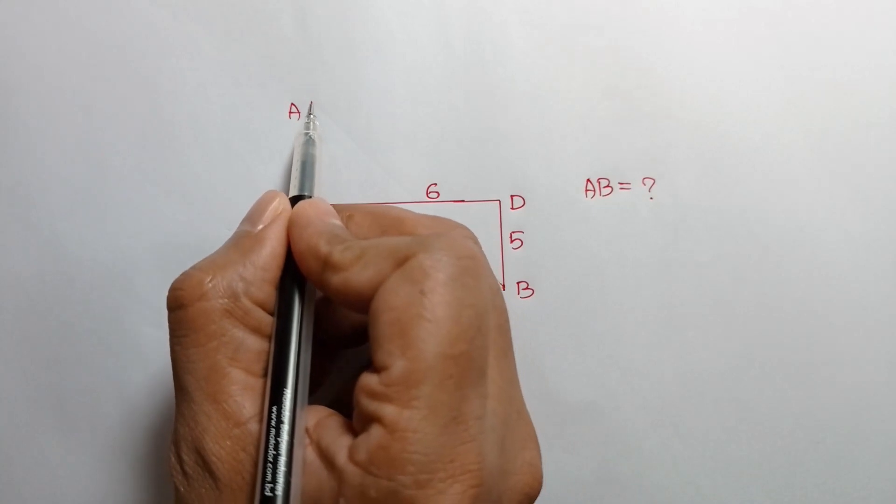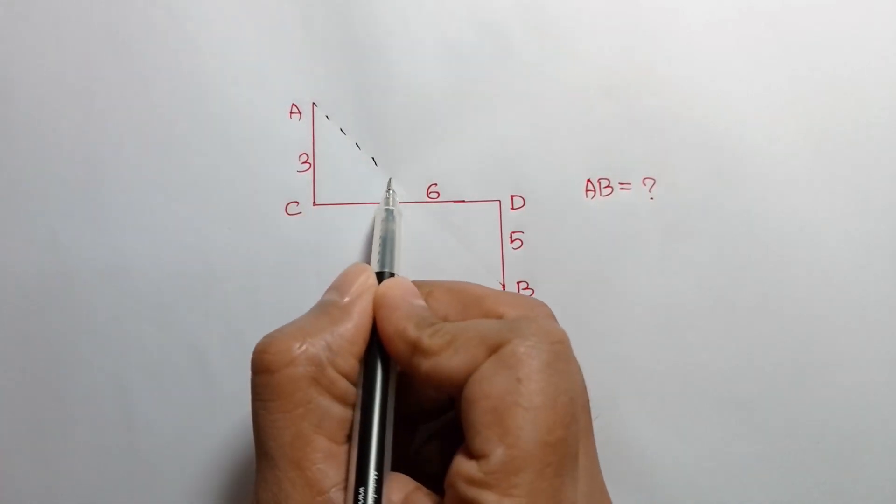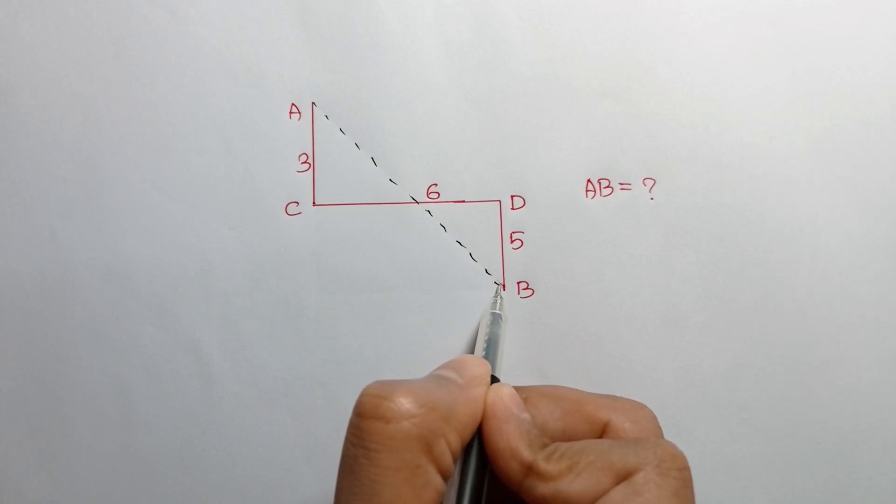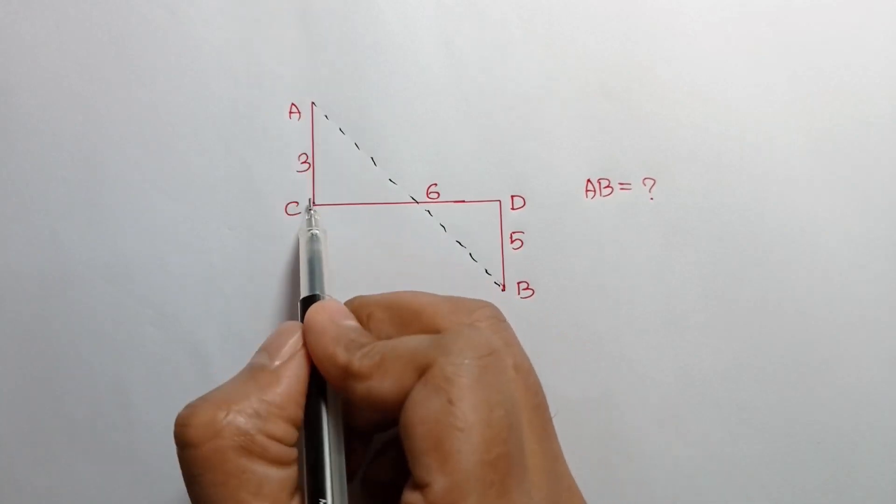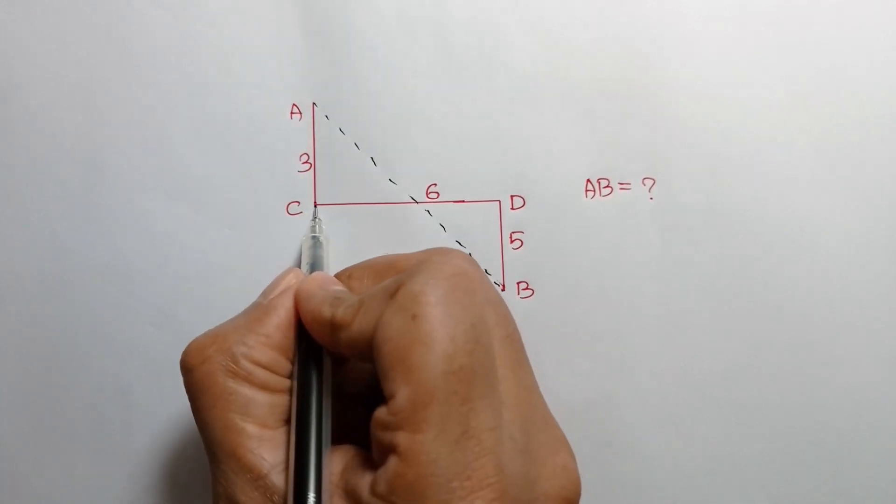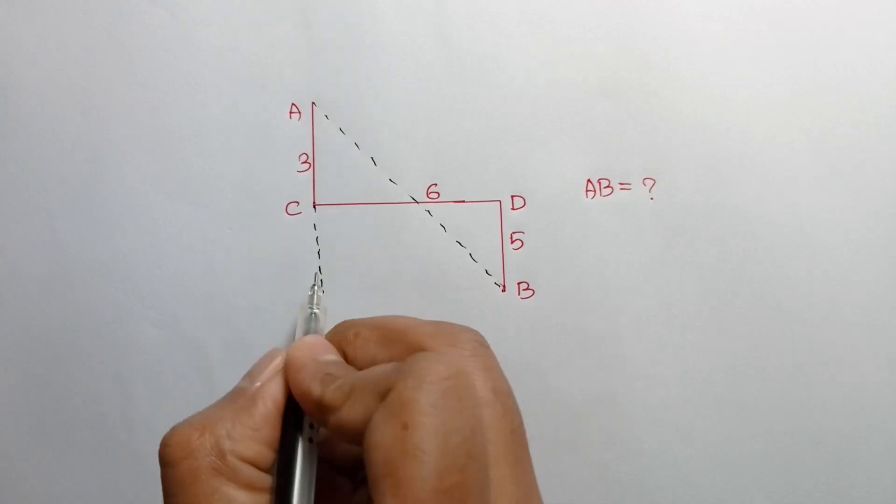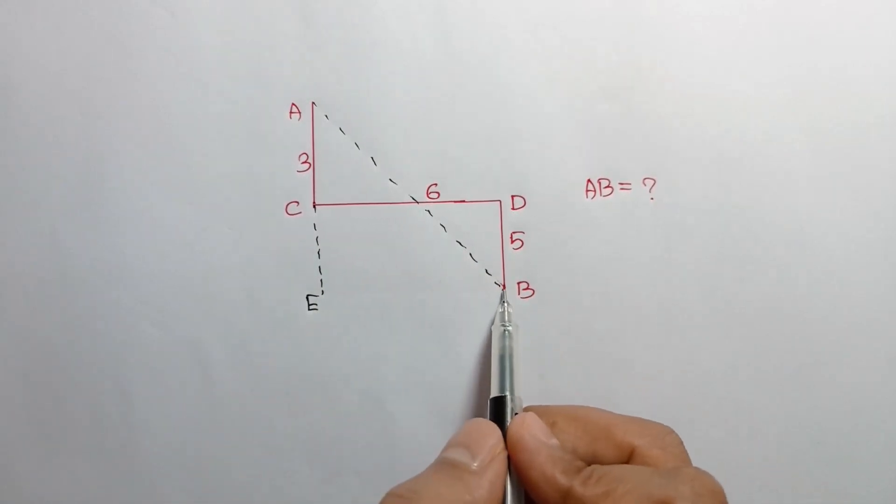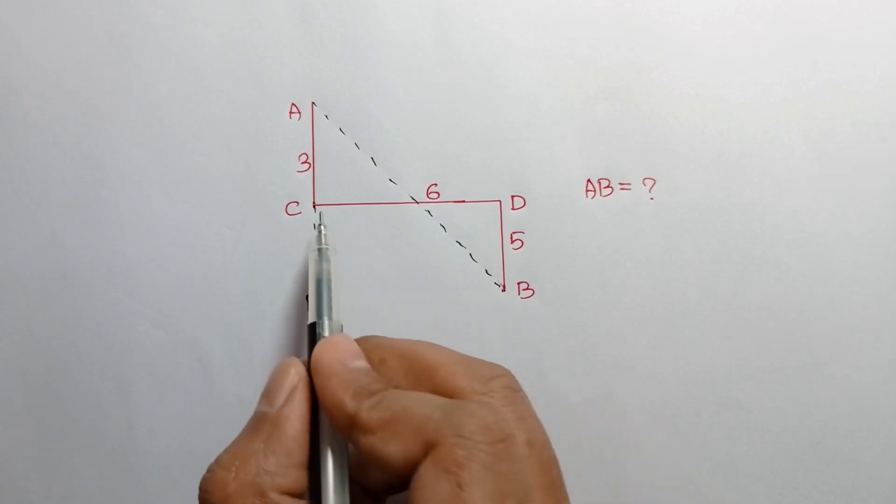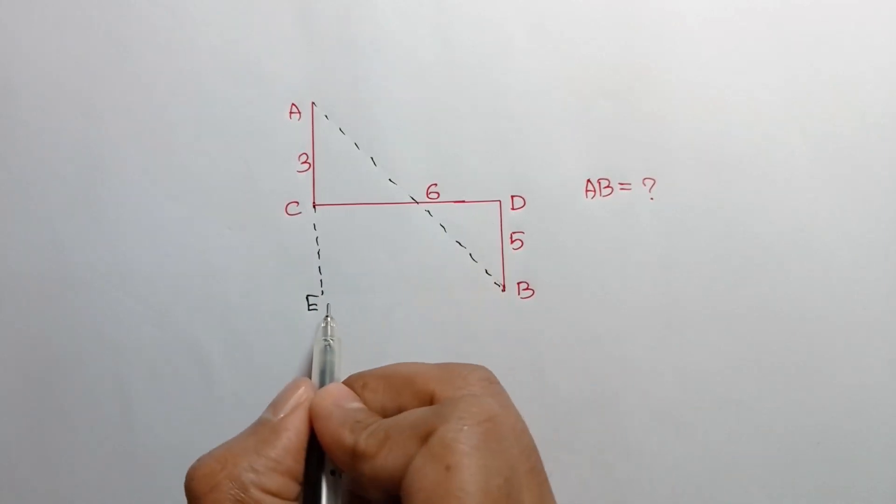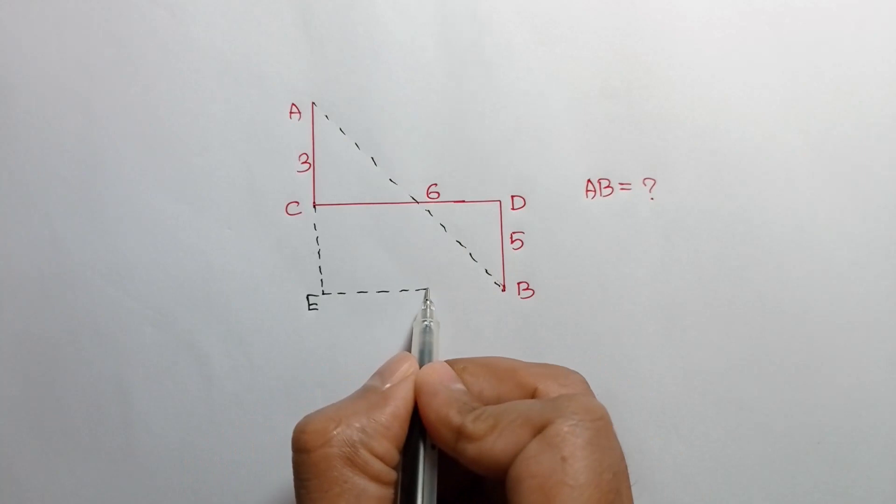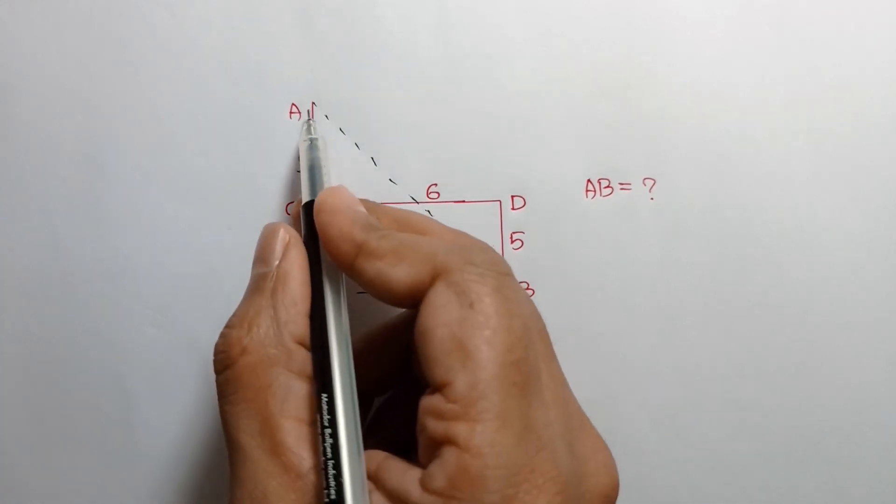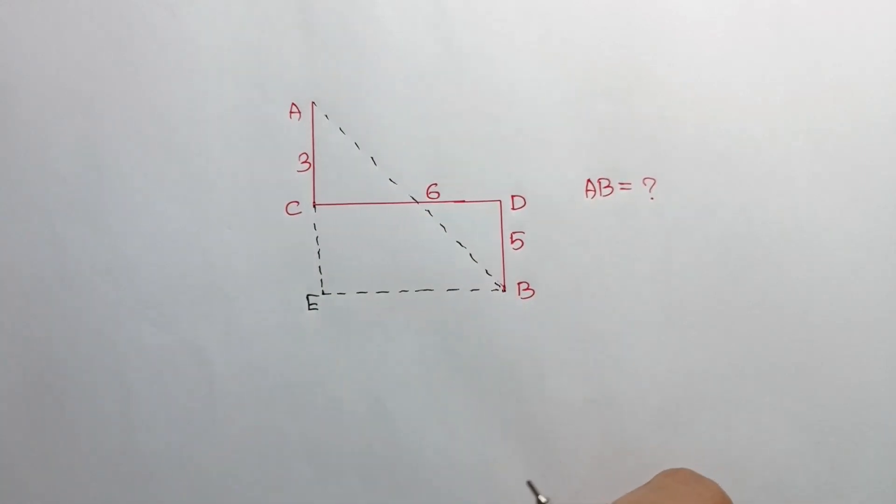First, join point A and B, and extend this line AC to AE, and draw a parallel line at point B according to CD. Consider this parallel line and this extended line meets at point E.